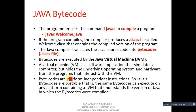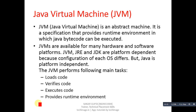The virtual machine hides the underlying operating system and hardware from programs that interact with it. Bytecodes are platform-independent instructions, meaning we can compile bytecode on any environment and run it on any other environment. Java's bytecodes are portable — the same bytecode can execute on any platform containing a JVM that understands the version of Java in which the bytecodes were compiled. In short, when we compile source code, the outcome is bytecode, with the extension .class.